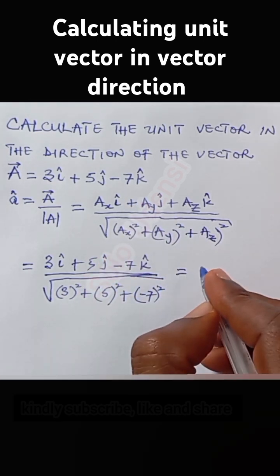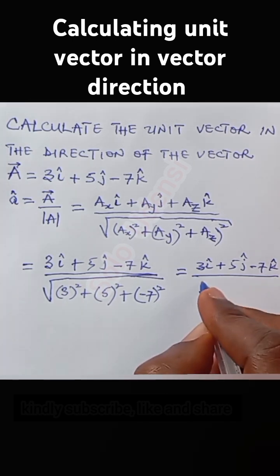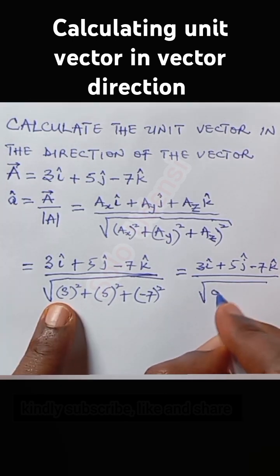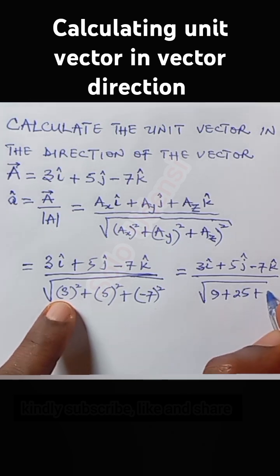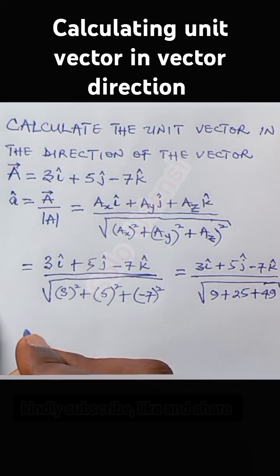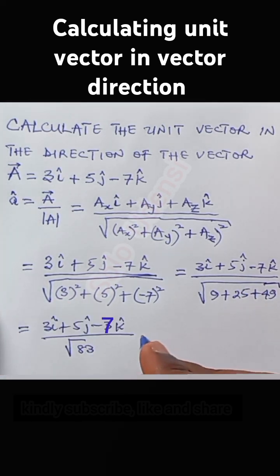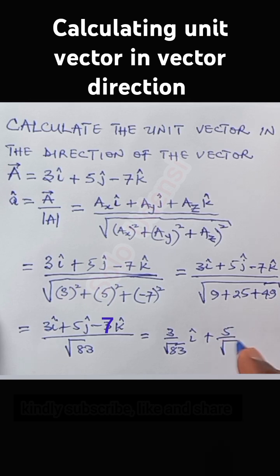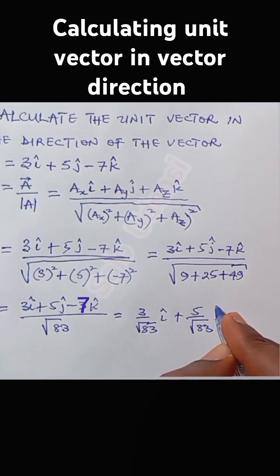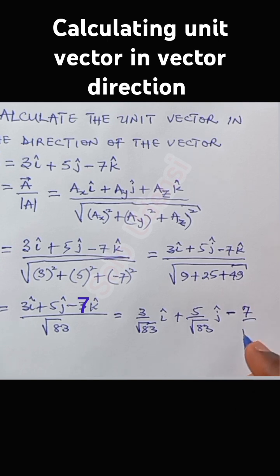That gives us the square root of 9 + 25 + 49, so the unit vector equals 3/√83 î + 5/√83 ĵ − 7/√83 k̂.